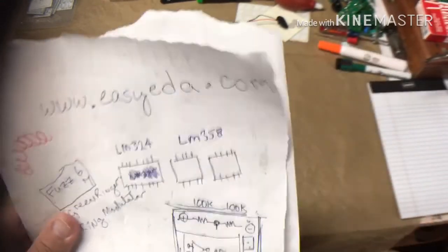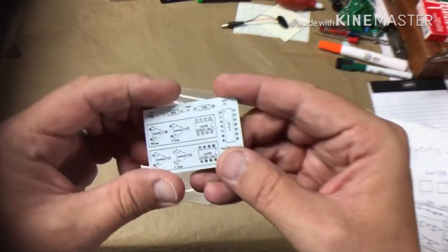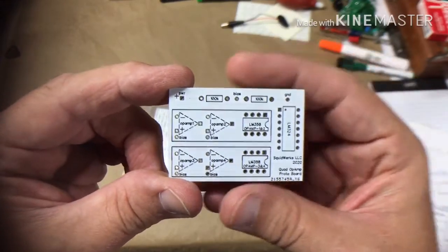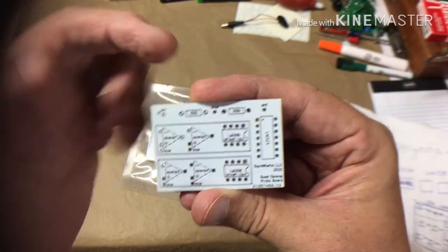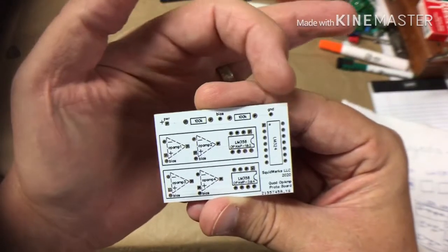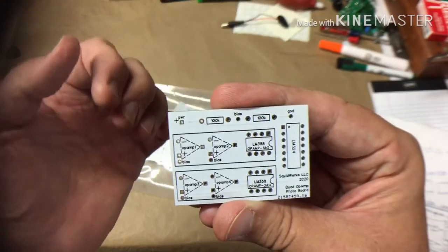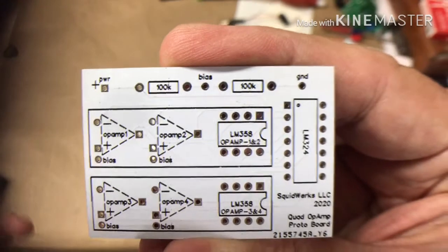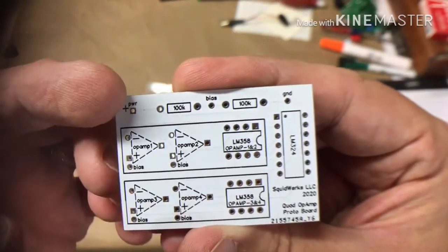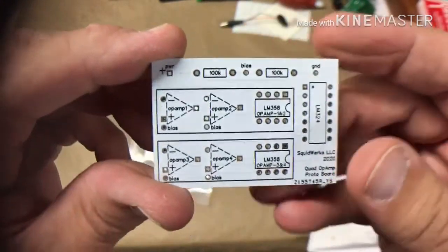So these came in the mail here recently. So this is pretty much what I drew out before, where I've got the positive and negative or ground power rails there. We've got a bias point that's going to get set between those two resistors, and I guessed 100K, but I've gone up as far as 250K before or down as low as 10K to set that bias point.